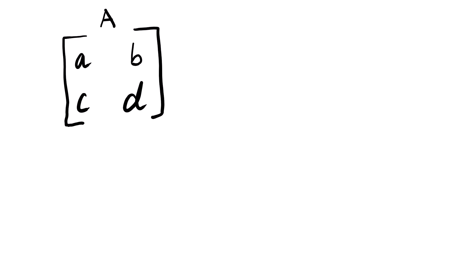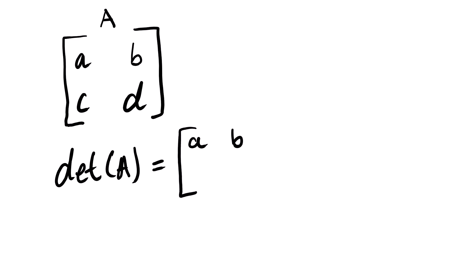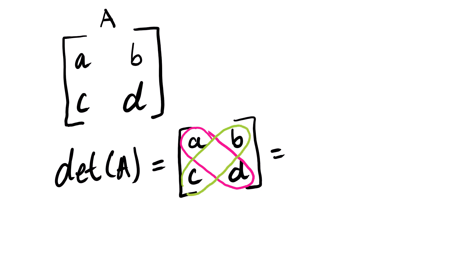Suppose we label this matrix as matrix A. What is the determinant of matrix A? It's simple. We are simply going to take the product of the diagonal elements minus the second diagonal element. This multiplied by this, minus this multiplied by this. So we have A multiplied by D, minus C multiplied by B, and this will give us our determinant.